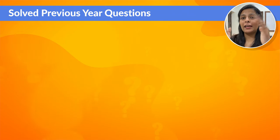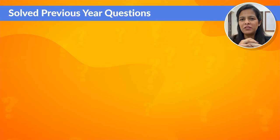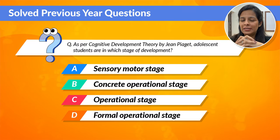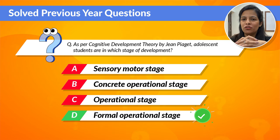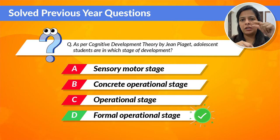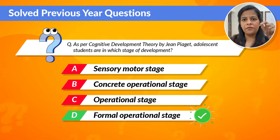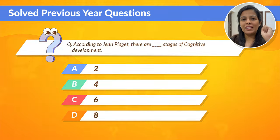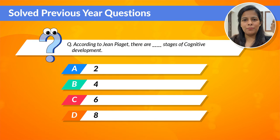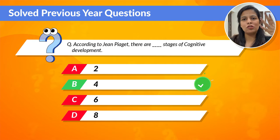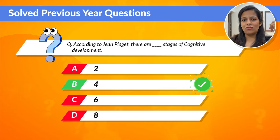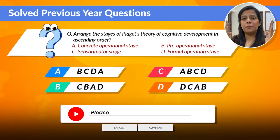Now that we've understood the entire cognitive development theory, let's look at some previous year questions. The first question is on your screen, and the correct option is the formal operational stage — because adolescent students belong to the age group of 11 years and older, and hence fall under the formal operational stage. The second question's correct answer includes the four stages of cognitive development: sensory motor, pre-operational, concrete operational, and formal operational stage. There's also a question displayed on screen — quickly comment the correct answer in the comments box!